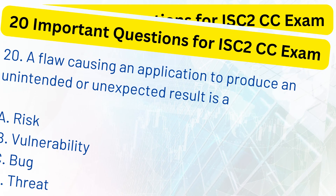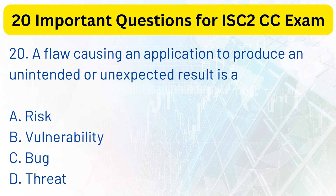Question 20. A flaw causing an application to produce an unintended or unexpected result is: a. Vulnerability. b. Vulnerability. c. Bug. d. Threat. The correct answer is c. Bug. Explanation. A bug is a flaw causing an application to produce an unintended or unexpected result that may be exploitable.